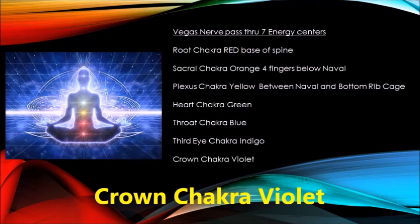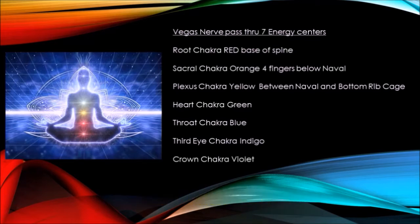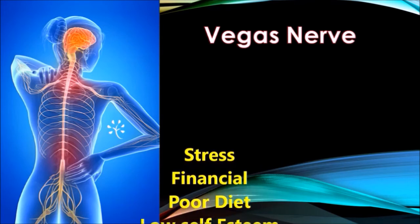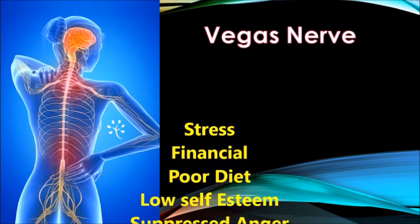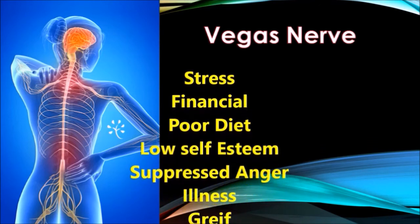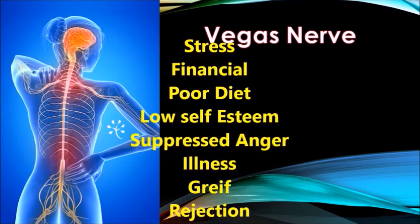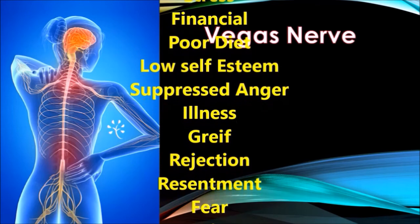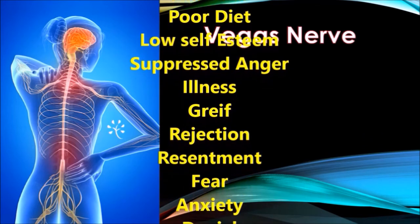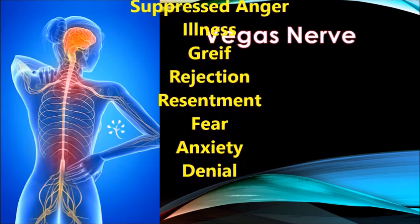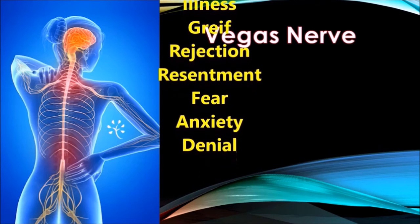Chakras can get clogged and cause numerous problems in our daily life, so we need to unclog them. Think of a stream of water flowing from a mountain — the stream is like your vagus nerve going from the brain all the way to the bottom of your spine. If the stream is blocked with huge rocks, the flow will be constricted. These giant rocks in our life can be related to work stress, financial turmoil, poor diet, low esteem, suppressed anger, illness, grief, heartbreak, rejection, resentment, fear, anxiety, stubbornness, tunnel vision, and denial. We need to unblock these energy centers, and the vagus nerve connects all these chakras.